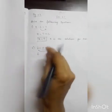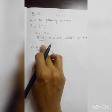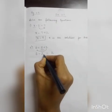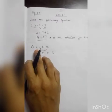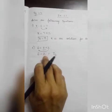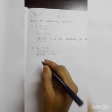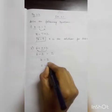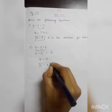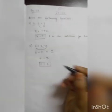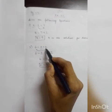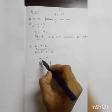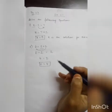We don't want 2 here — we want only z. So keeping z as such, if 2 goes to that side, since it is plus 2, it becomes minus 2. So 6 minus 2 is equal to z. 6 minus 2 is 4, so z equals 4. Both 4 equals z and z equals 4 are the same.